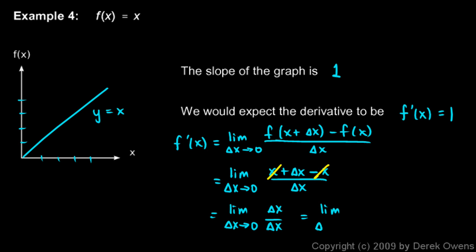So this is the limit as delta x approaches 0 of 1, which is simply 1, exactly what we expected.